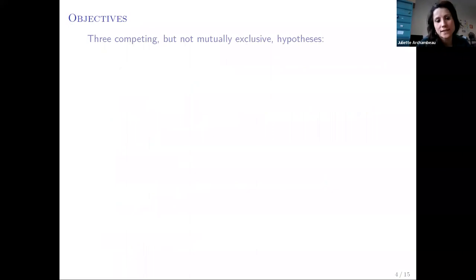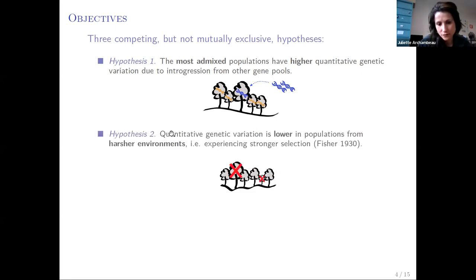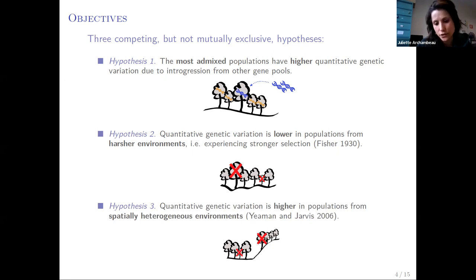In our case, we aim to test three competing but not mutually exclusive hypotheses. The first hypothesis was that the most admixed populations have higher quantitative genetic variation due to introgression from other gene pools. Our second hypothesis was that quantitative genetic variation is lower in populations from harsher environments, so potentially populations experiencing stronger selection. Our last hypothesis was that quantitative genetic variation is higher in populations from spatially heterogeneous environments. Importantly, the last two hypotheses require the action of natural selection, while the first does not. Therefore, we may expect the last two hypotheses to be mostly supported for fitness-related traits, while the first may apply uniformly to all traits.